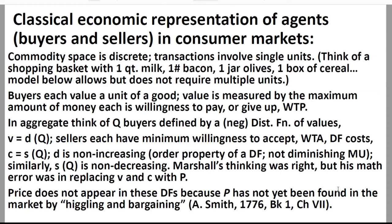Buyers each value a unit of the good, and that value is measured by their maximum amount they're willing to pay — what we'll call WTP. When buyers and sellers arrive at market, the buyers are bringing values, individual values as a function of the quantities they want, and that's typically just one unit. Sellers each have a minimum willingness to accept — call that WTA — and that is cost as a function of quantities.